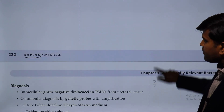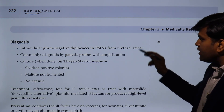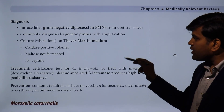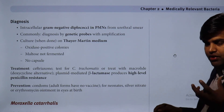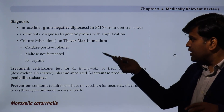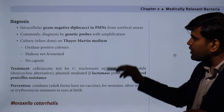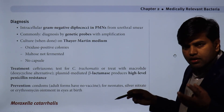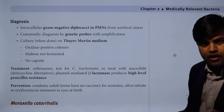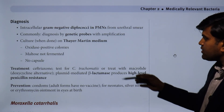Diagnostically, intracellular gram-negative diplococci in polymorphonuclear neutrophils from urethral smear are characteristic. It is commonly diagnosed by genetic probe (nucleic acid amplification). Culture is done on Thayer-Martin medium — a modification of chocolate agar to which antibiotics vancomycin, polymyxin, and nystatin are added, making it selective for Neisseria. So: N. meningitidis grows on chocolate agar; N. gonorrhoeae grows on Thayer-Martin medium.